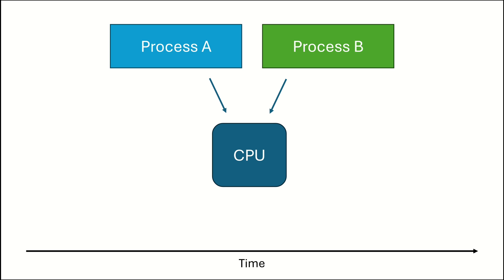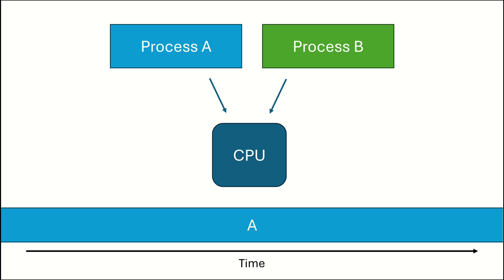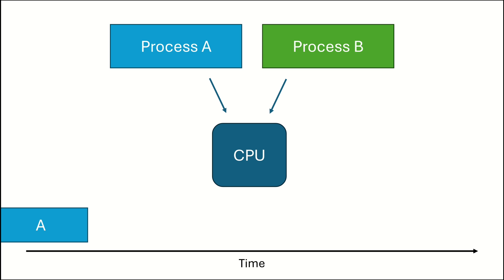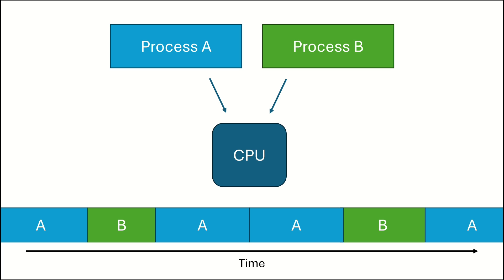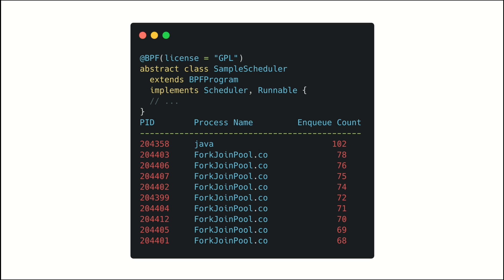Consider we have two processes, process A and B, and only one CPU core. A simple scheduling policy would be just to let process A run all the time. The only problem: process B would be starving, which is not that great. So what typical schedulers would do is start with scheduling A for a specific time slice, then scheduling B and so on. Maybe process A has a higher priority than process B, or process B currently waits on I/O, so the scheduler decides to schedule A again, then maybe B again and A again. This ensures that process B and A are responsive and can run alongside each other.